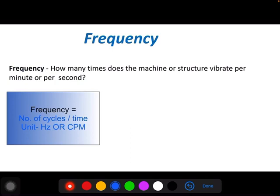In physics we already studied frequency. As a definition, frequency is number of cycles over the period of time. You can consider number of cycles per minute or per second. But in case of vibration, you can define it as how many times the machine or structure vibrates per minute or per second. The unit in frequency is Hertz, which is one cycle per second.